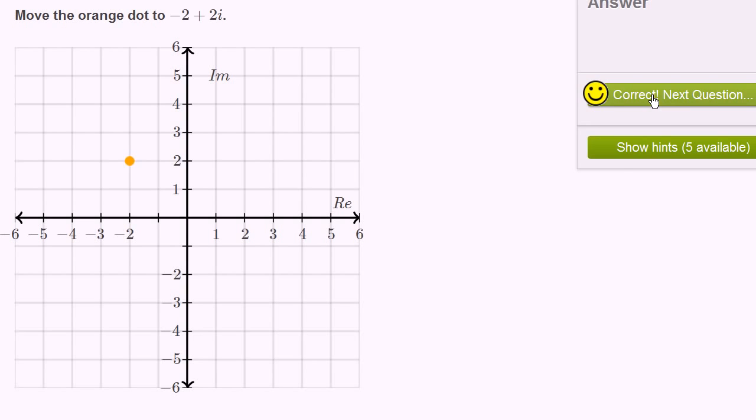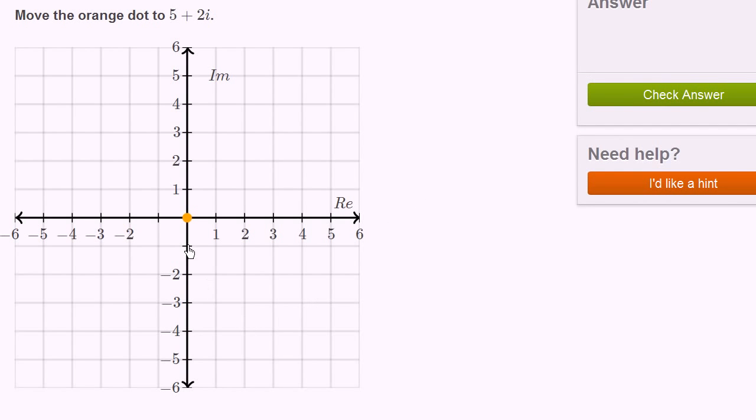Let's do a few more of these. So 5 plus 2i. Once again, real part is 5, imaginary part is 2. And we're done.